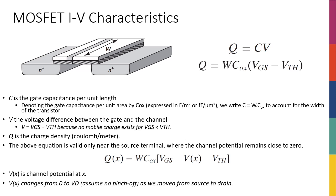Since the charge of the channel is there because this structure works like a capacitor, I'm going to call Q equal to CV. Now, C is the effective capacitance of this insulator. I'm going to define a parameter called COX, which is basically the gate capacitance per unit area — whatever material you use is going to have a certain capacitance. This oxide is going to have some COX expressed in farads per meter squared or femtofarads per micrometer squared, representing how many farads I have per unit area.